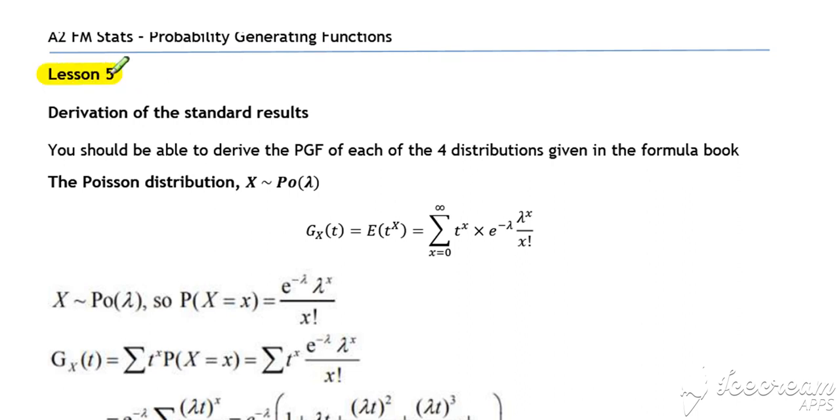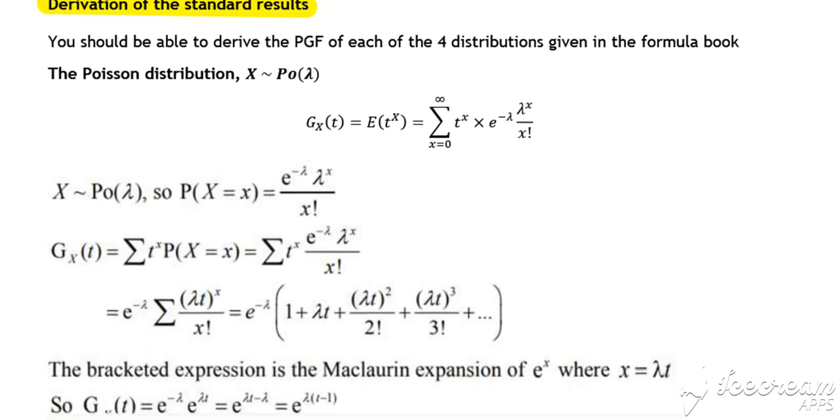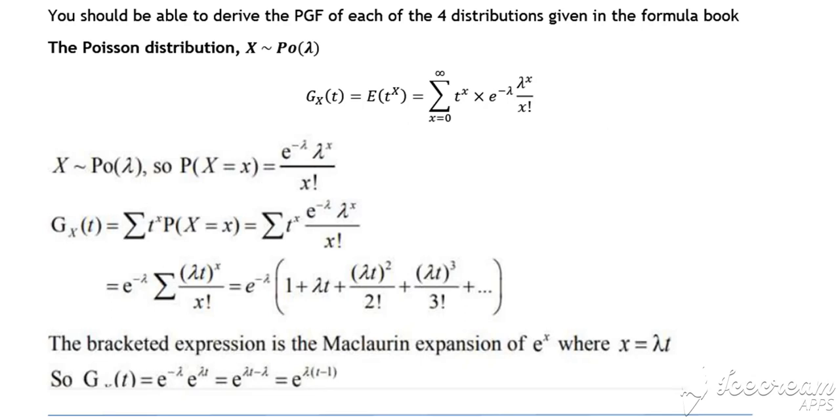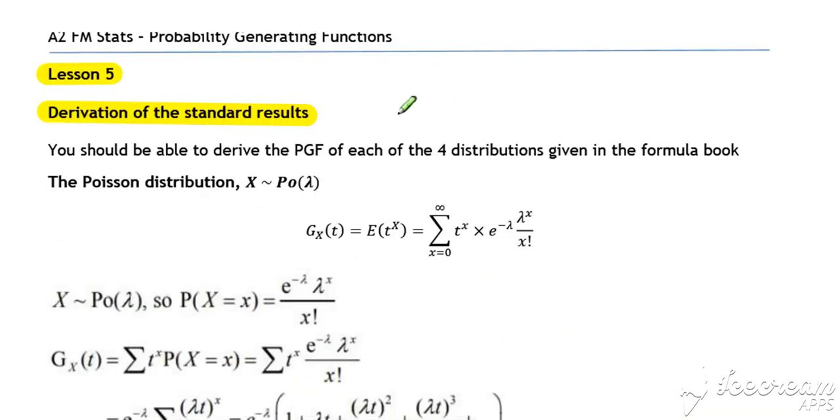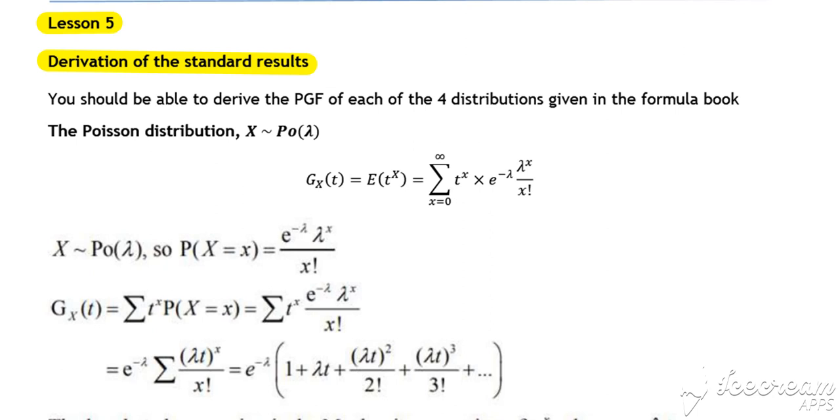Finally, in Lesson 5, we're going to look at the derivation of the standard results in a more general way than we did earlier. Earlier in Lesson 2, we looked at deriving from first principles the results for binomials, geometrics, and Poisson distributions for specific values of parameters. Here we just generalize with the parameter left in.